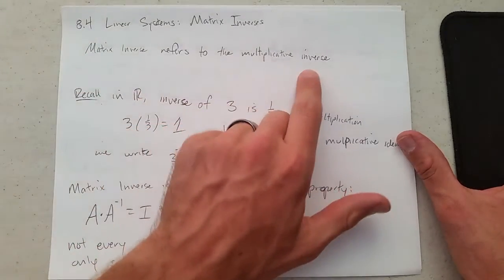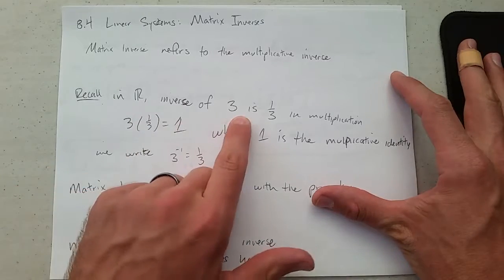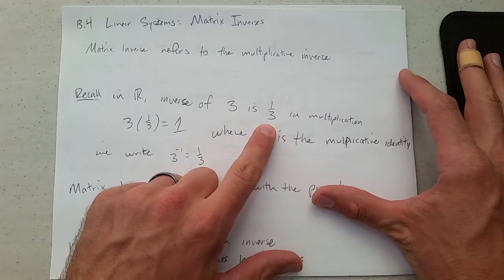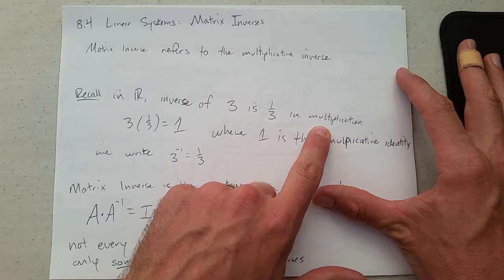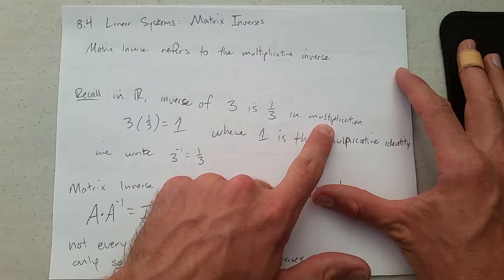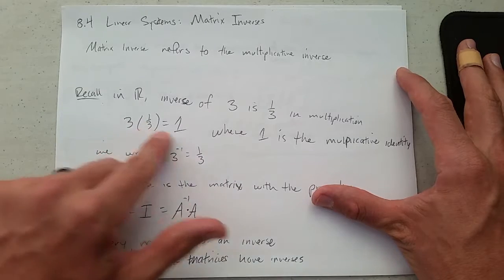We're talking about the multiplicative inverse, and back in numbers, the inverse of 3 would be one-third in multiplication. If you're in addition, it would be negative 3, but we're thinking about multiplication now. So why is that the inverse? 3 times a third is 1.